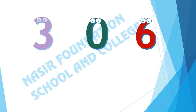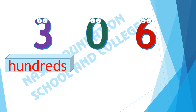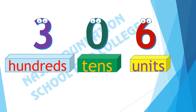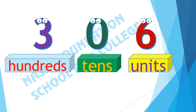In the number 306, the digit 3 is placed at the hundreds place. The place value of 0 is tens. And the place value of 6 is units — there are 6 units in this number. There are 6 units, 0 tens, and 3 hundreds.